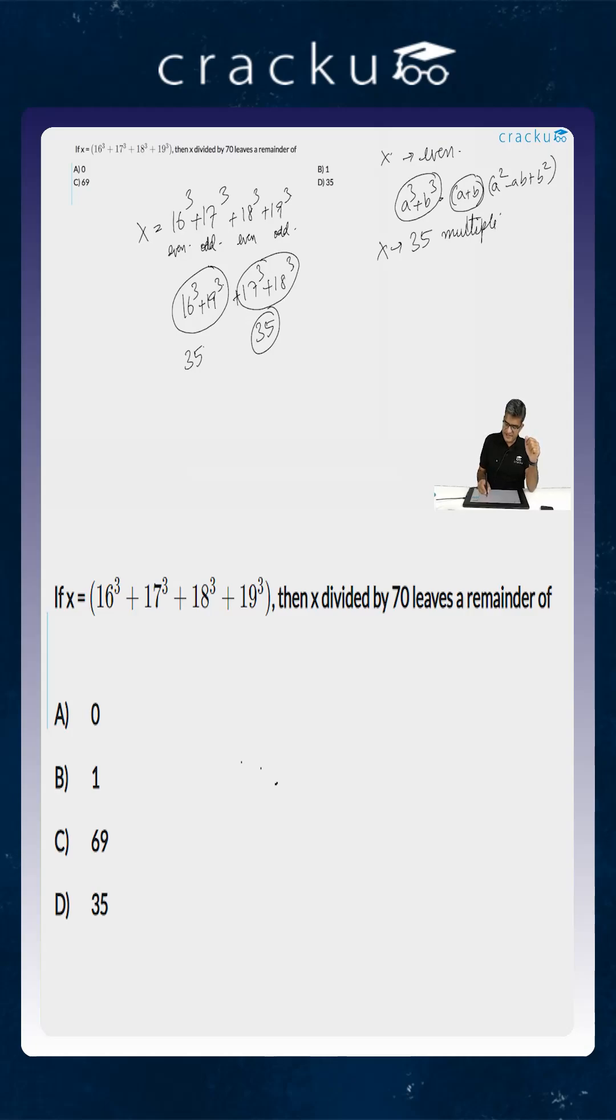What we are saying is that x is an even number which is a multiple of 35. So x has to be a multiple of 70. Therefore, when x is divided by 70, the remainder will be 0 which is option a.